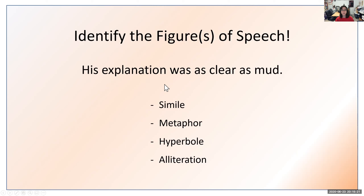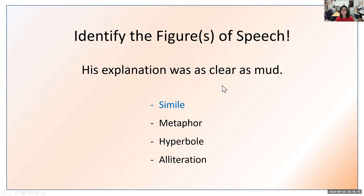Next: 'His explanation was as clear as mud.' That means the explanation really wasn't clear because mud is not clear. Is this a simile, metaphor, hyperbole, or alliteration? It's comparing his explanation to mud, and we see the keyword 'as' — as clear as mud. Similes use 'like' or 'as,' so if you said simile, you are correct. We could also say 'his explanation was like mud.' The keyword 'as' makes this a simile, whereas metaphors use 'is' or 'was.'